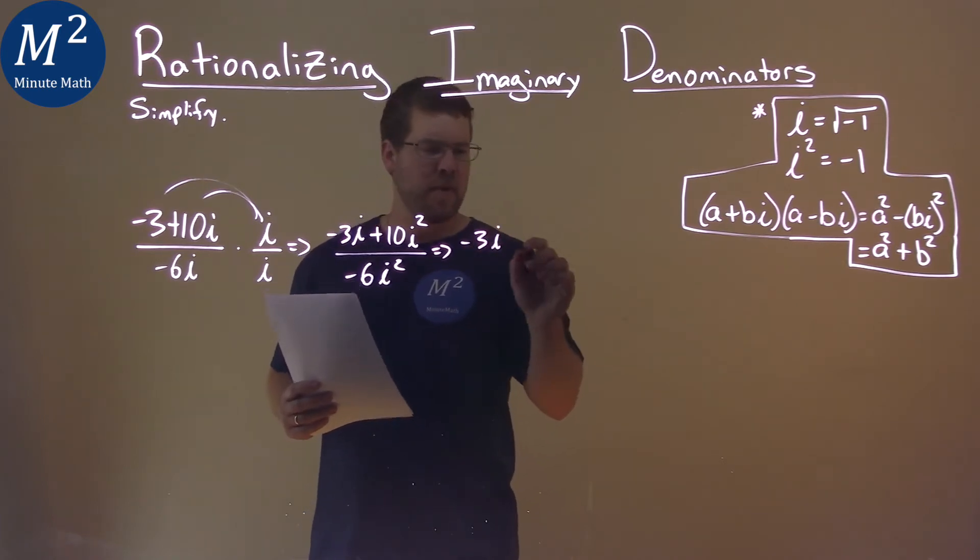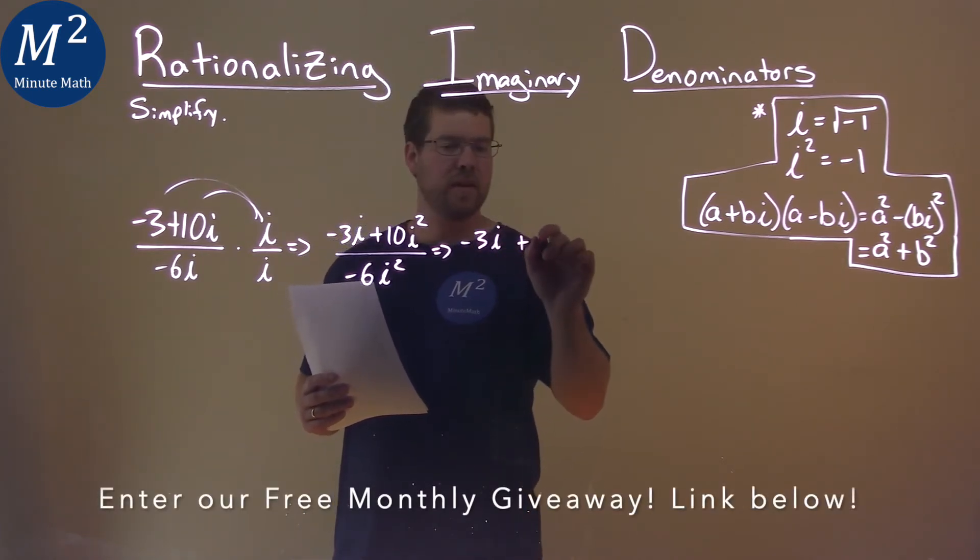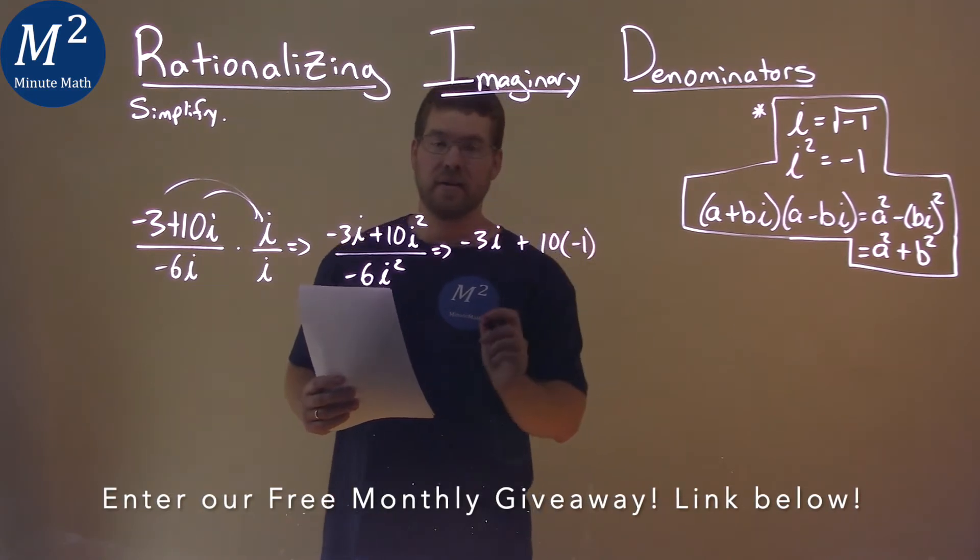putting that, or taking that information, so negative 3i plus 10, and put a negative 1 instead of i squared,